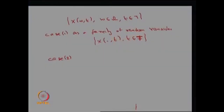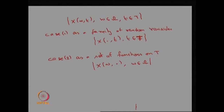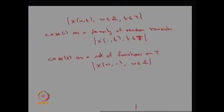Case 2 defines the stochastic process as a set of functions on capital T — that is, a collection of X(w, ·) for w belonging to omega. That means I have made a function on capital T, and once I fix one w, I will have one function. If I fix another w, where w is a possible outcome, a different possible outcome will create a different function.